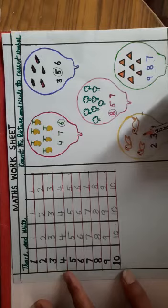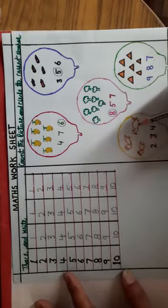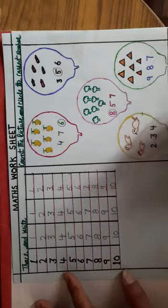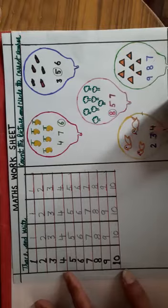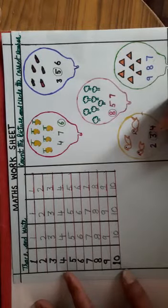These are birds. How many birds are here? Count it. 1, 2, 3. There are 3 birds. Where is number 3? Yes. This is number 3. Number 3 is circle.